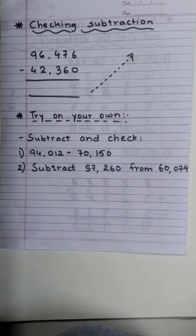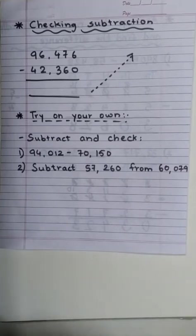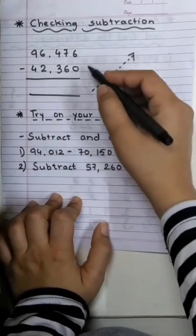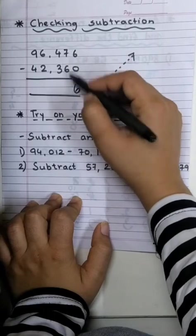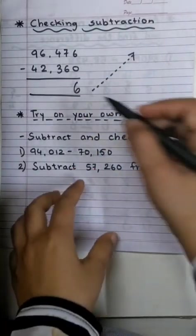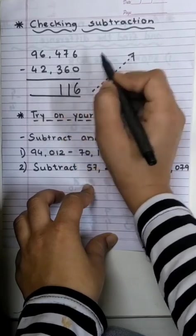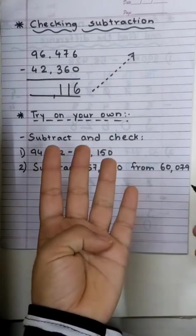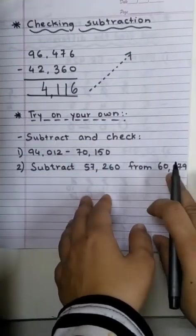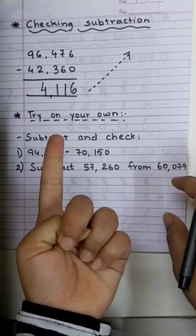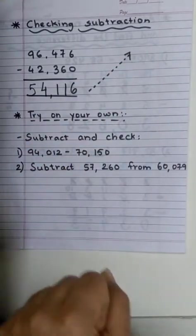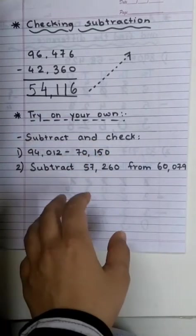Now, I am going to show you one trick through which you can check your subtraction sums. Let's start. First of all, we have to subtract the sum as we used to do. 6 minus 0 will be 6. 7 minus 6. After 6, 7. So, 1. 4 minus 3 is also 1. 6 minus 2. After 2: 3, 4, 5, 6. So, 4. And 9 minus 4. After 4: 5, 6, 7, 8, 9. So, answer is 5. So, the difference over here is 54,116.